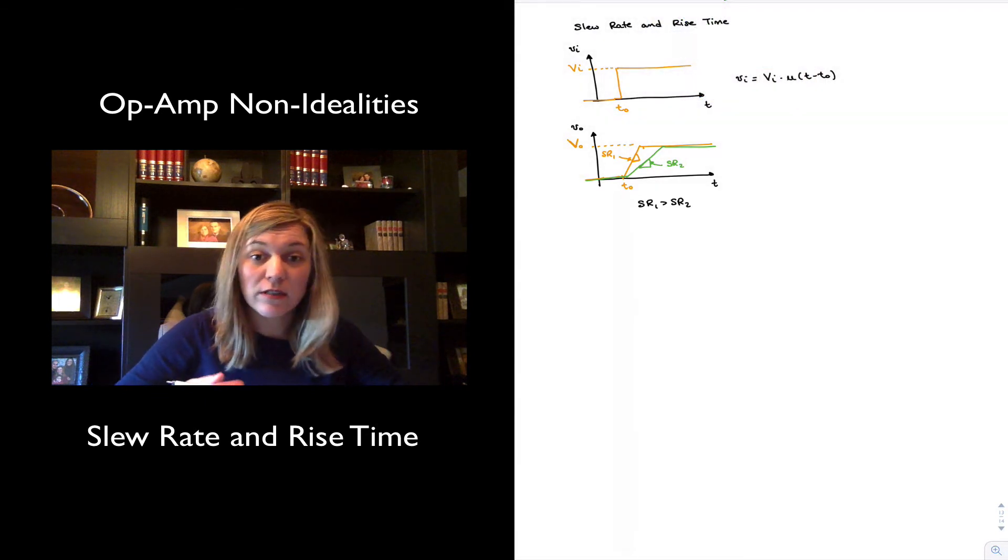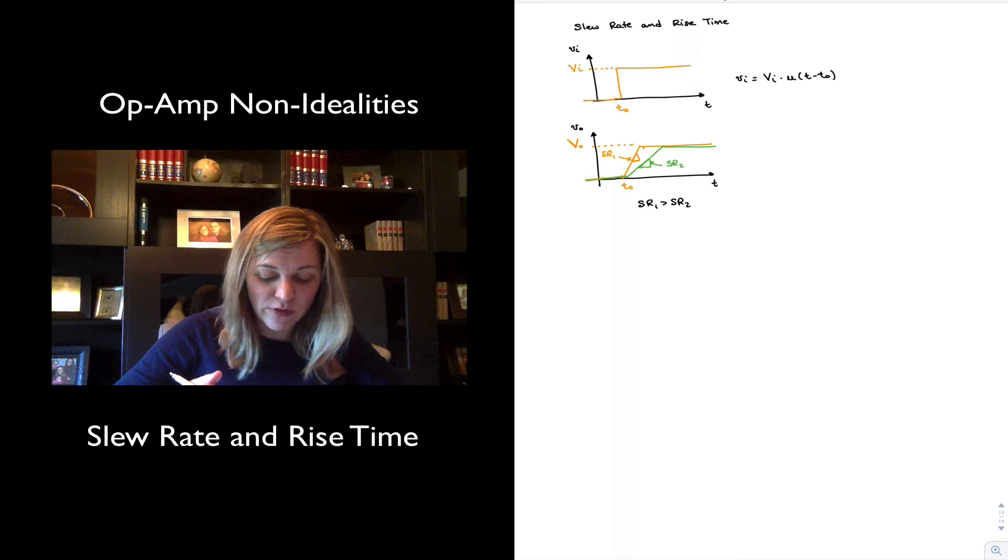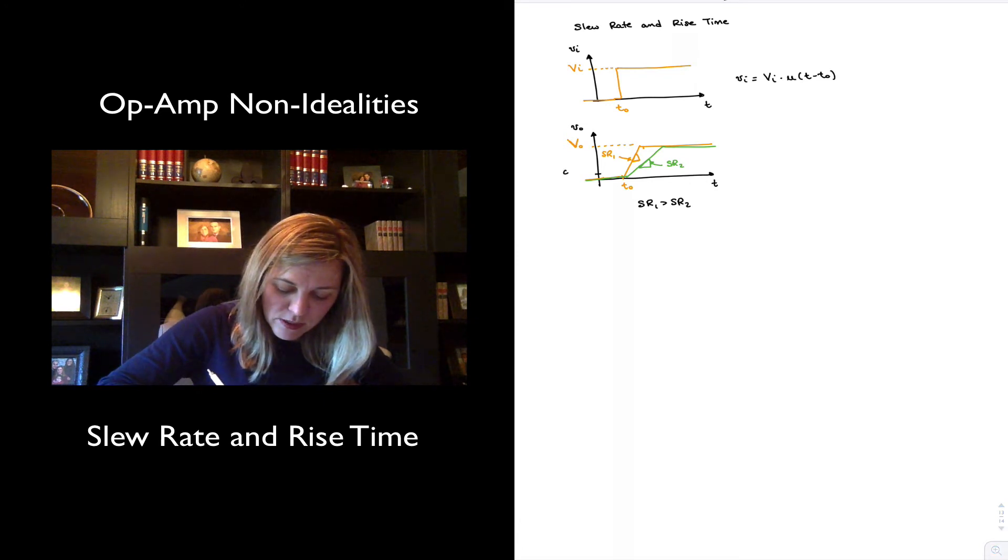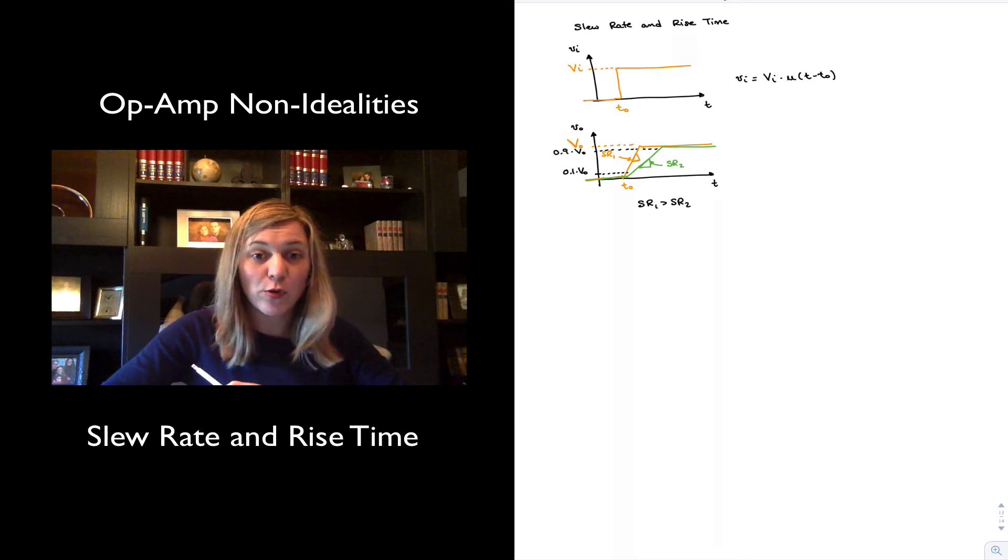The rise time is defined again as the time it takes for the output voltage to go from 10% of its final value to 90% of its final value. In this case, this is 0.1 times the final V0, and this is 0.9 times the final capital V0.